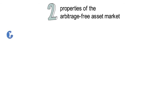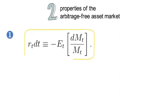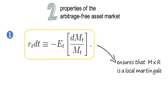So the first property of an arbitrage-free asset market is that the risk-free rate at time t is equivalent to minus the conditional expectation as of time t of dMt over Mt. Now if one were to look at the proof, one would see that this condition needs to hold to ensure that the third property of the SDF holds, namely M times R is a local martingale.